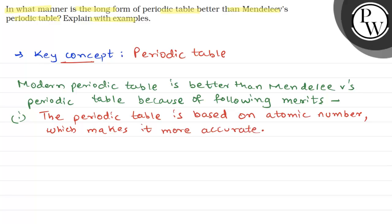Second, there is correlation between the position of element and their electron configuration.